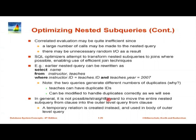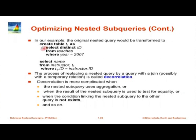In general, it is not possible to directly turn a nested query into a join, but there is a way using temporary relations. First: CREATE TABLE t1 AS SELECT DISTINCT id FROM teachers WHERE year = 2007 — finding all who taught a course in 2007, with each id appearing only once. Then join instructor with t1 where t1.id = instructor.id. This join can use any algorithm — merge join, hash join, or index nested loop join — whichever is cheapest.